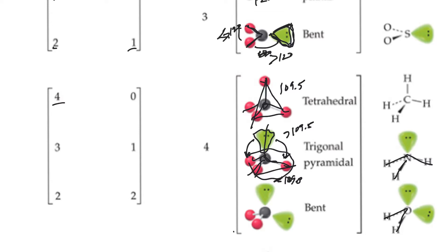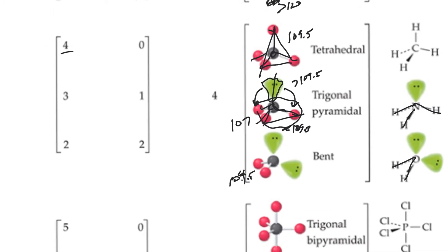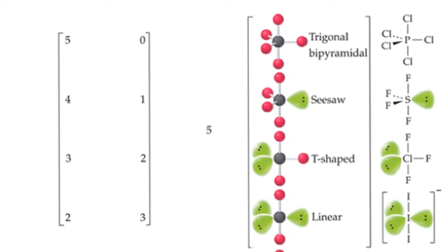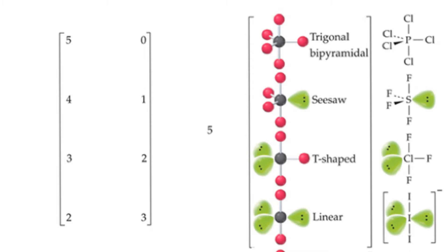If you have more than four electron domains, you're breaking the octet rule — four pairs obey it, anything more does not. But that's okay if the central atom is in the third row or beyond, because there are empty d-shell orbitals those electrons can occupy, and the atoms are big enough that the electrons can get away from each other. So it's acceptable to break the octet rule for larger central atoms. Having five electron domains breaks the octet rule.